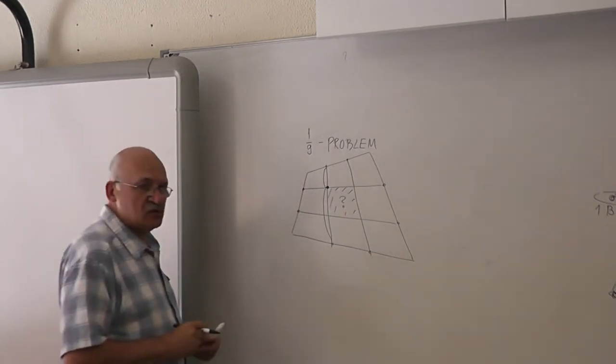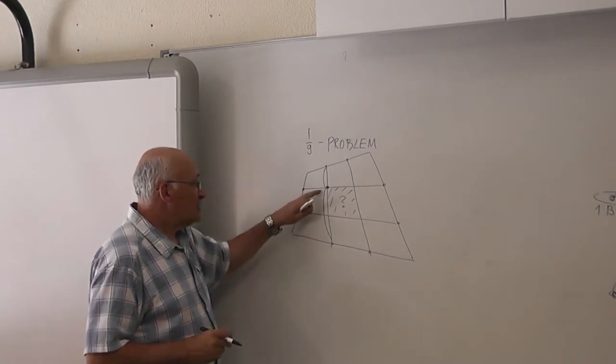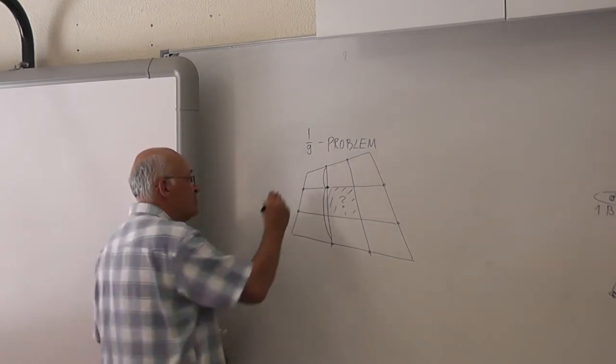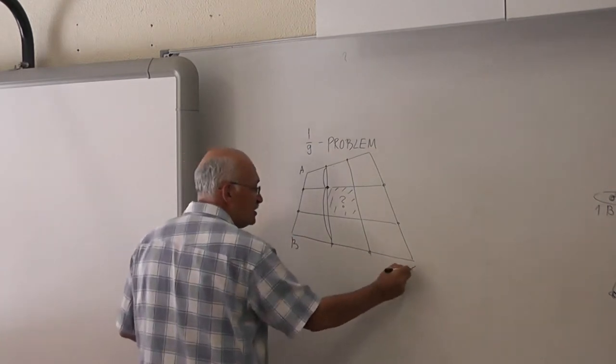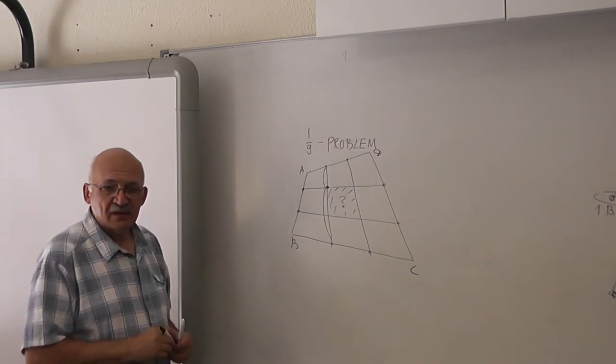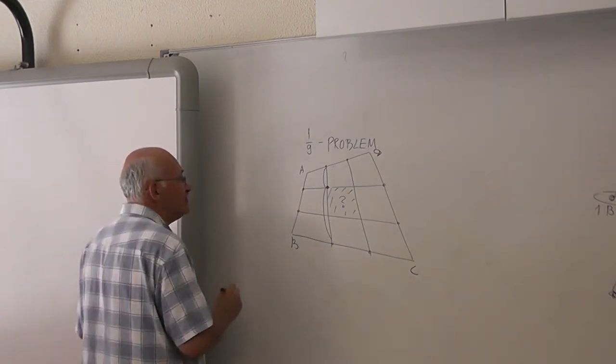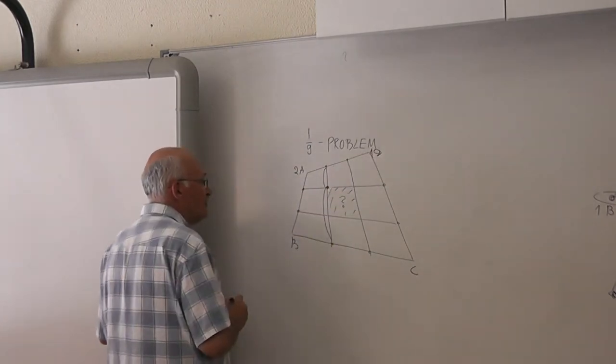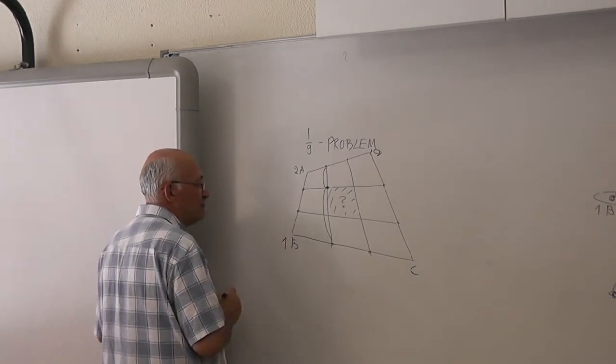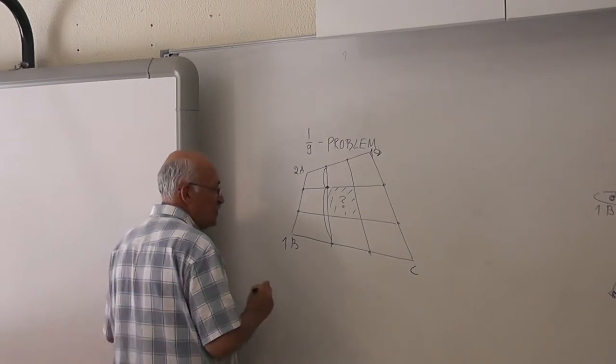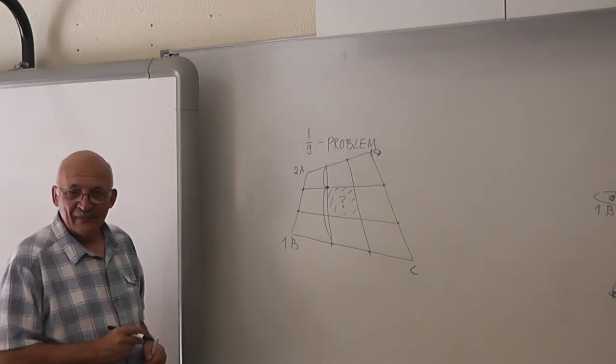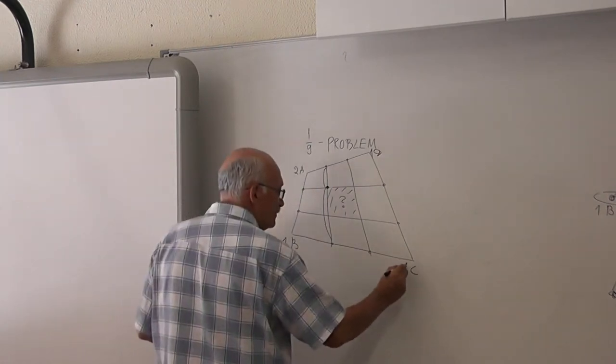What masses to put at the vertices to have the center here? At vertices A, B, C, D. To have the center here. In A, let's say two. In D, one. In B, one. In C, two. And also in D. One, two, two, and one.